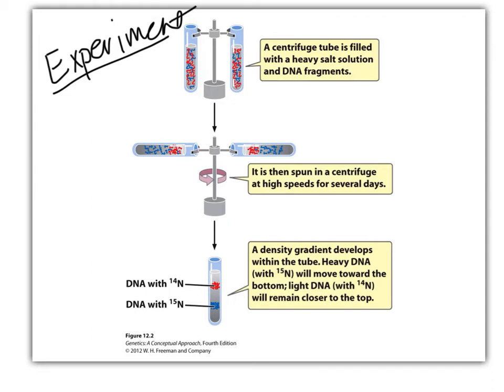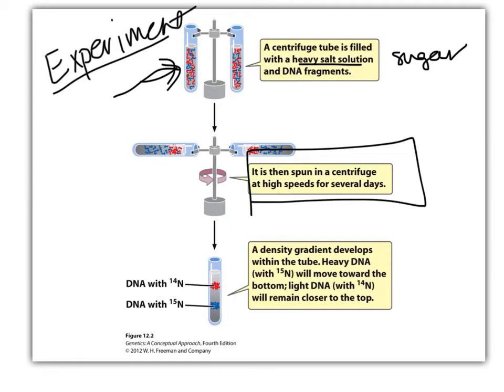For the experiment, we need to use density gradient centrifugation. That means a test tube is filled with a heavy salt or sugar solution so it can differentiate the difference in weight between molecules. Something really heavy will travel all the way to the bottom when you spin it in a centrifuge, whereas something lighter will float somewhere in the middle because it's like a thick jello solution, and something really light would be up at the top. Lighter stuff stays at the top, middle-weight stuff in the middle, and really heavy stuff at the bottom.